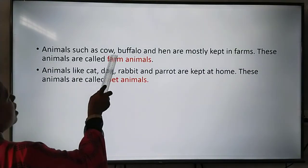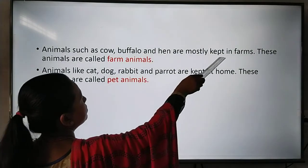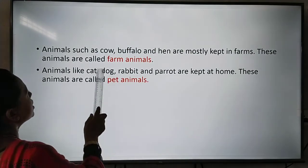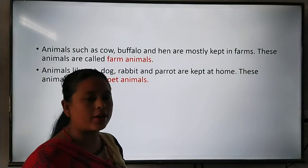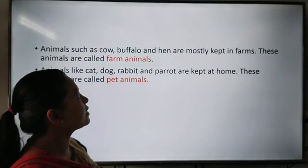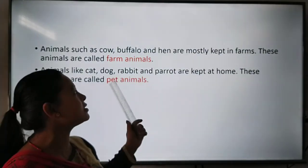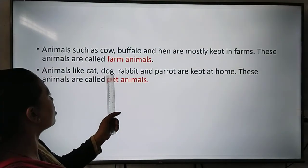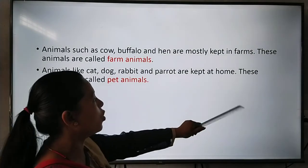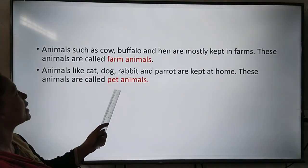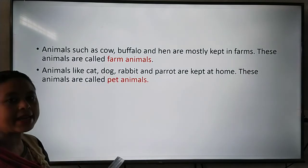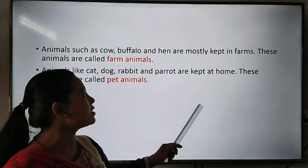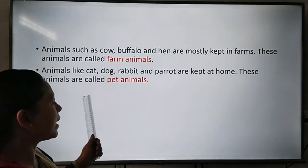Animals such as cow, buffalo, and hen are mostly kept in farms — these animals are called farm animals. Animals like cat, dog, rabbit, and parrot are kept at home — these animals are called pet animals.